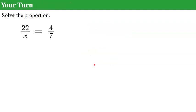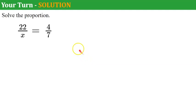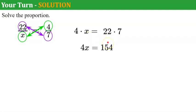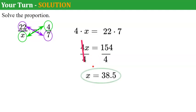Your turn again. I would like you to solve the proportion and come back and hit play when you're done. Welcome back. Let's go ahead and solve — I'm going to use cross-product property this time. I'm going to multiply across: x times 4, or 4 times x. Remember, multiplication is commutative. And then my other cross: 22 times 7. So 4x equals 154. The inverse of multiply by 4 is to divide by 4. What I do to one side, I do to the other. So x is equal to 38.5.